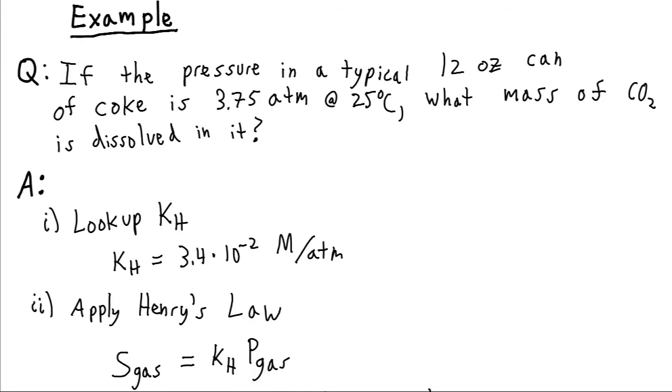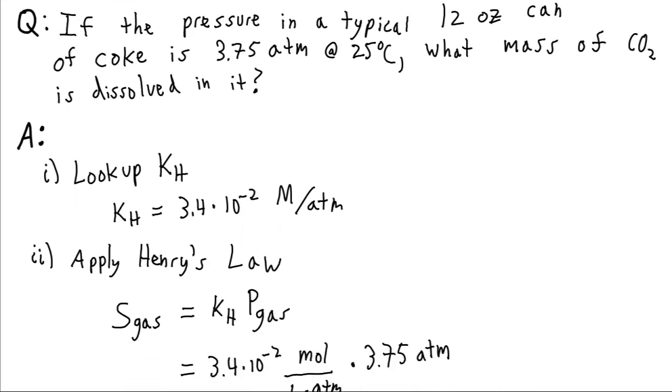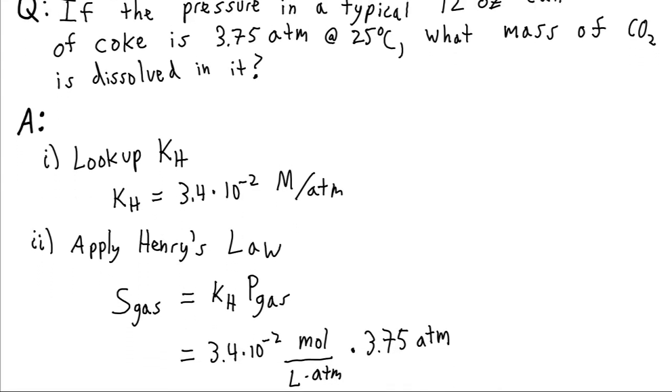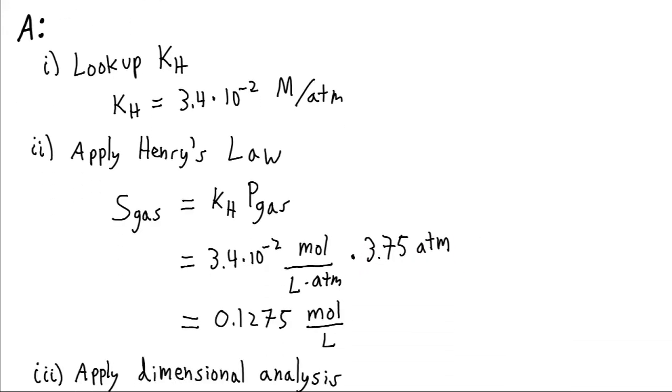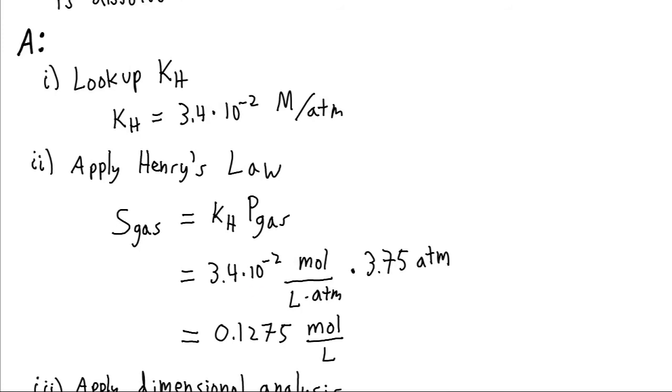Now that we know that, we can apply Henry's Law, which tells us that the solubility of the gas is equal to that Henry's Law constant times the pressure of the gas above the solution. So plugging in here, I'm going to write it as moles per liter instead of molarity. It means the same thing, but we're going to want to deal with these moles and these liters in another step. And we multiply that by the 3.75 atmospheres. So atmospheres will cancel out, and we will have 0.1275 moles per liter left over.